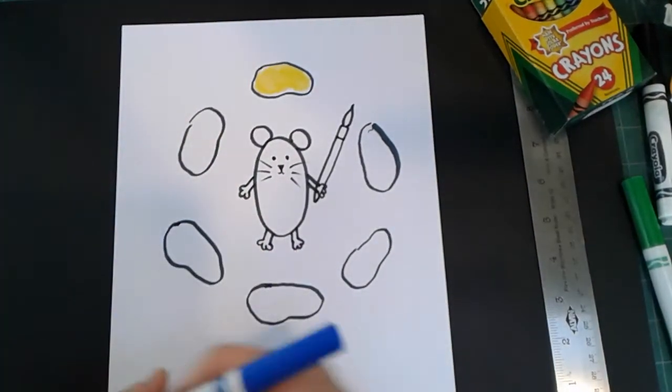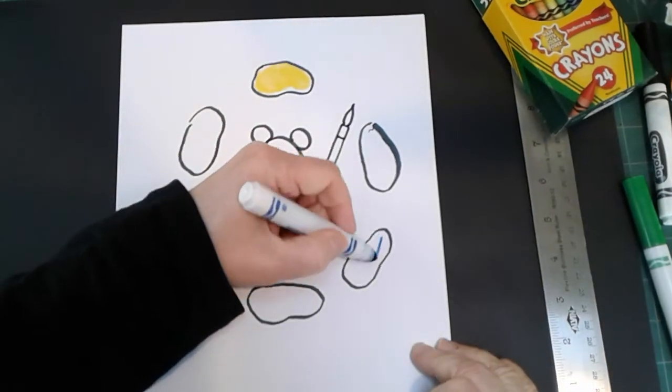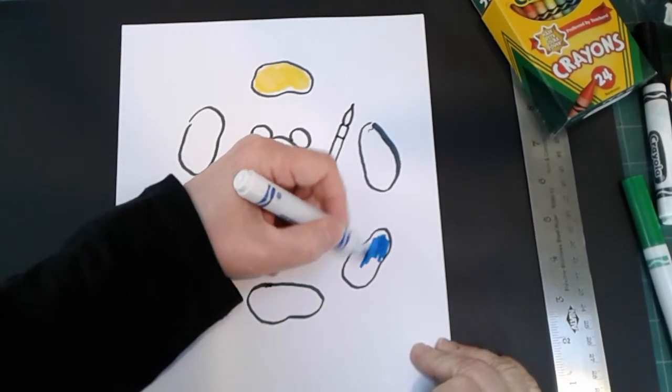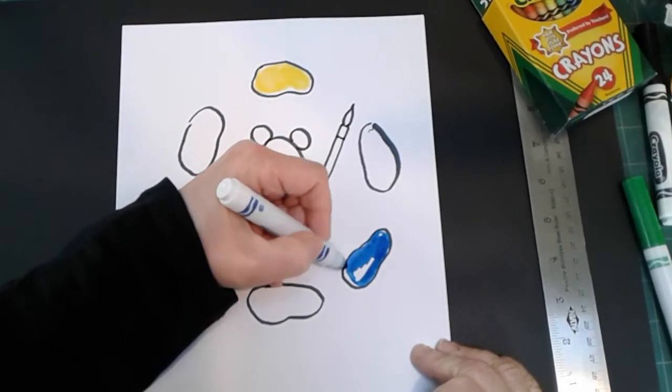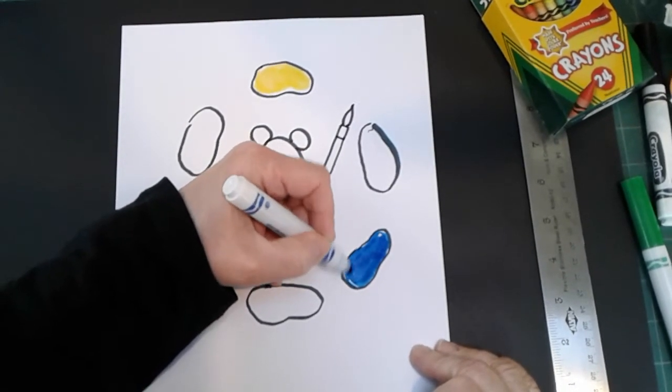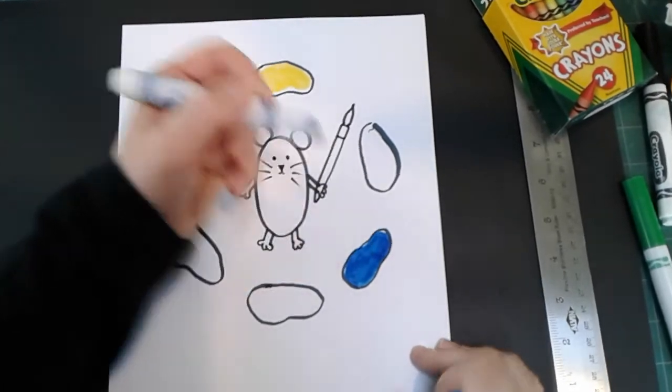Next primary color, blue. Nice, juicy markers make the color go down very quickly.